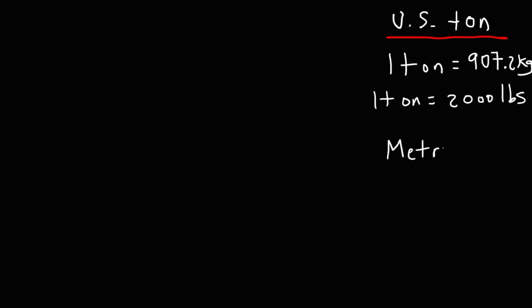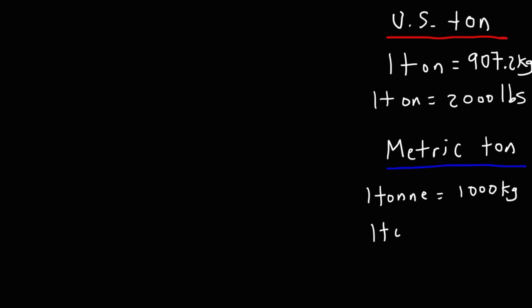Next, let's talk about the metric ton, because it's different. One metric ton — which you'll see spelled T-O-N-N-E, as opposed to T-O-N — is equal to 1,000 kilograms. Notice how it's different than a U.S. ton. One metric ton is also equal to 2,204.6 pounds.